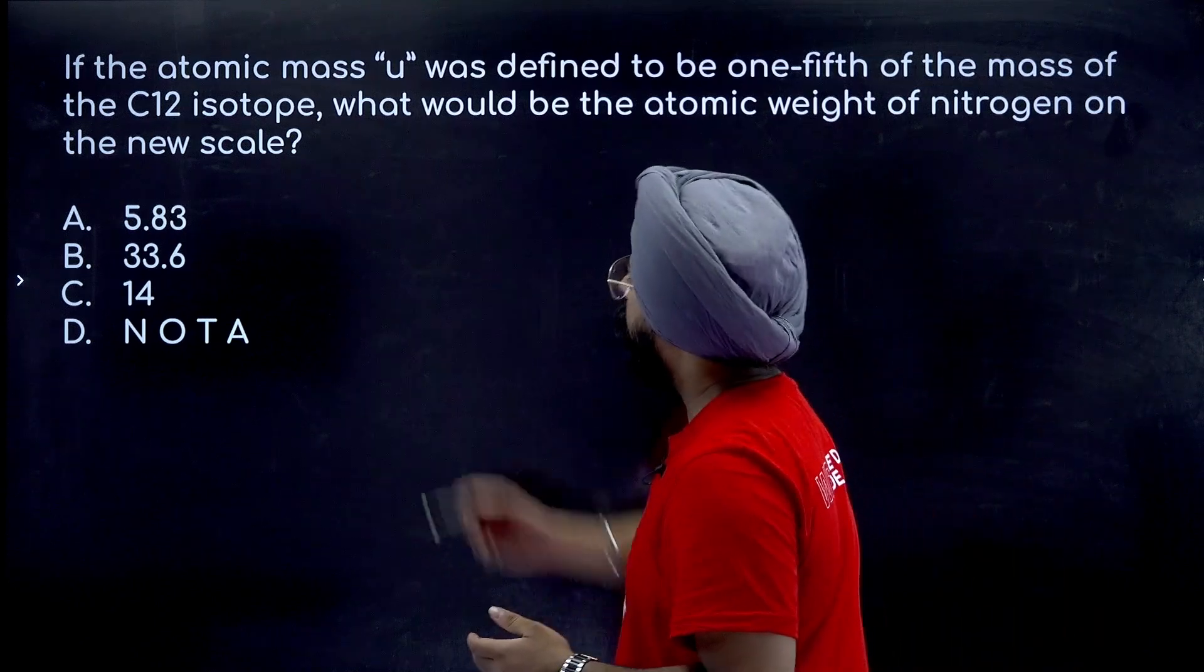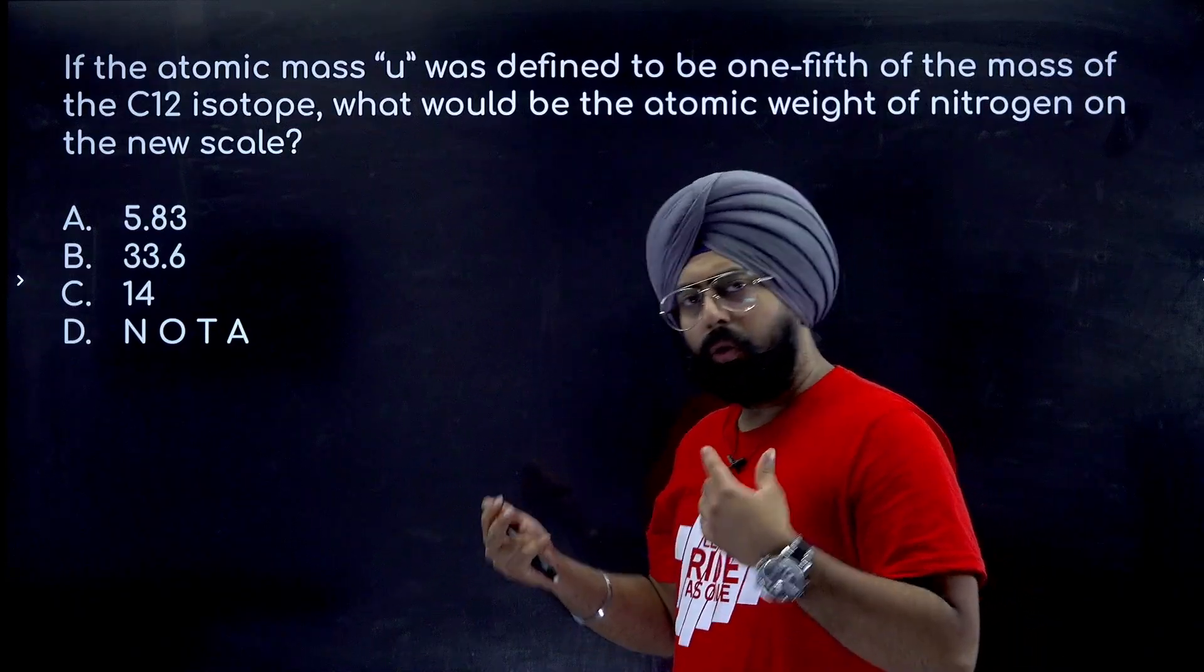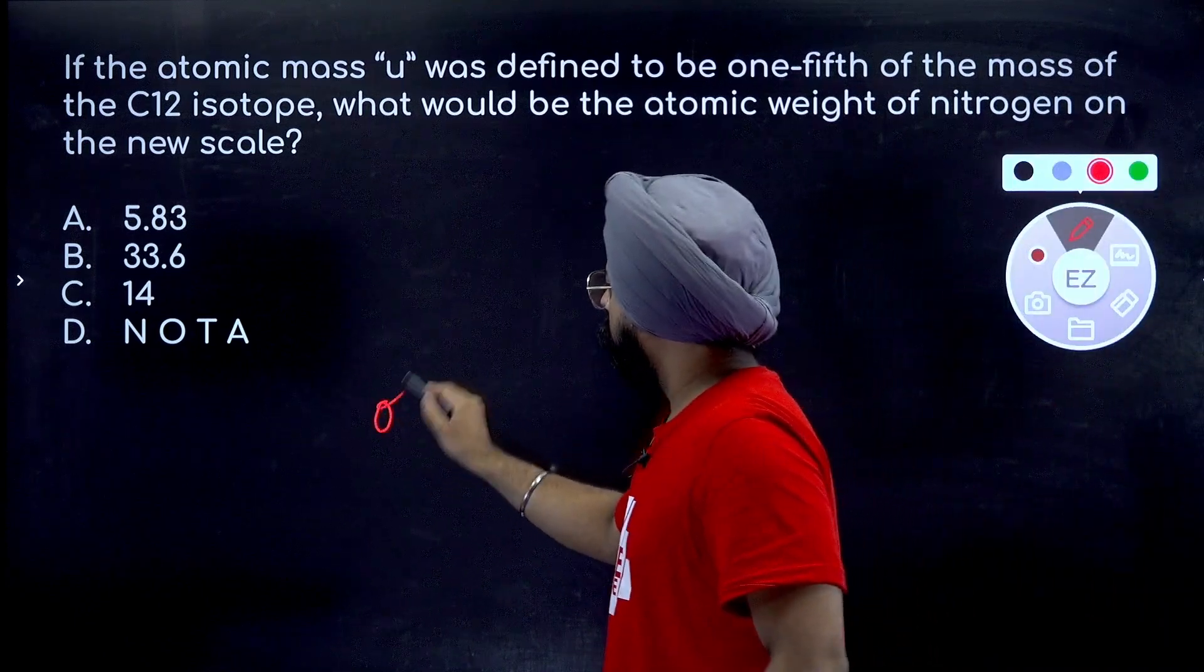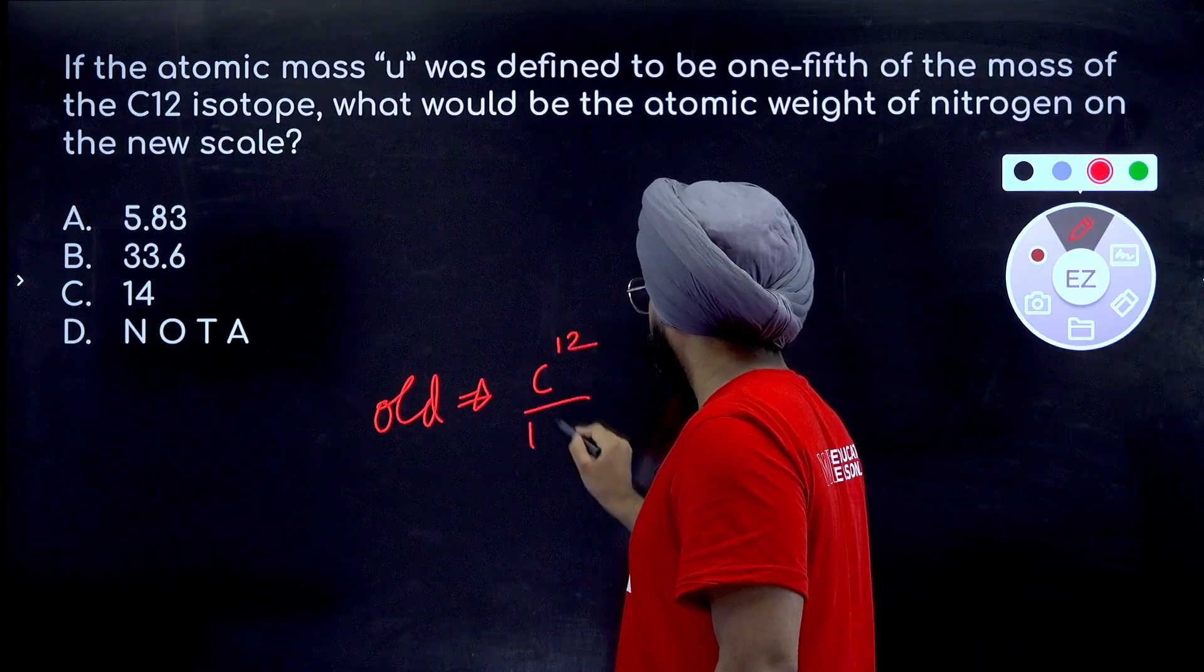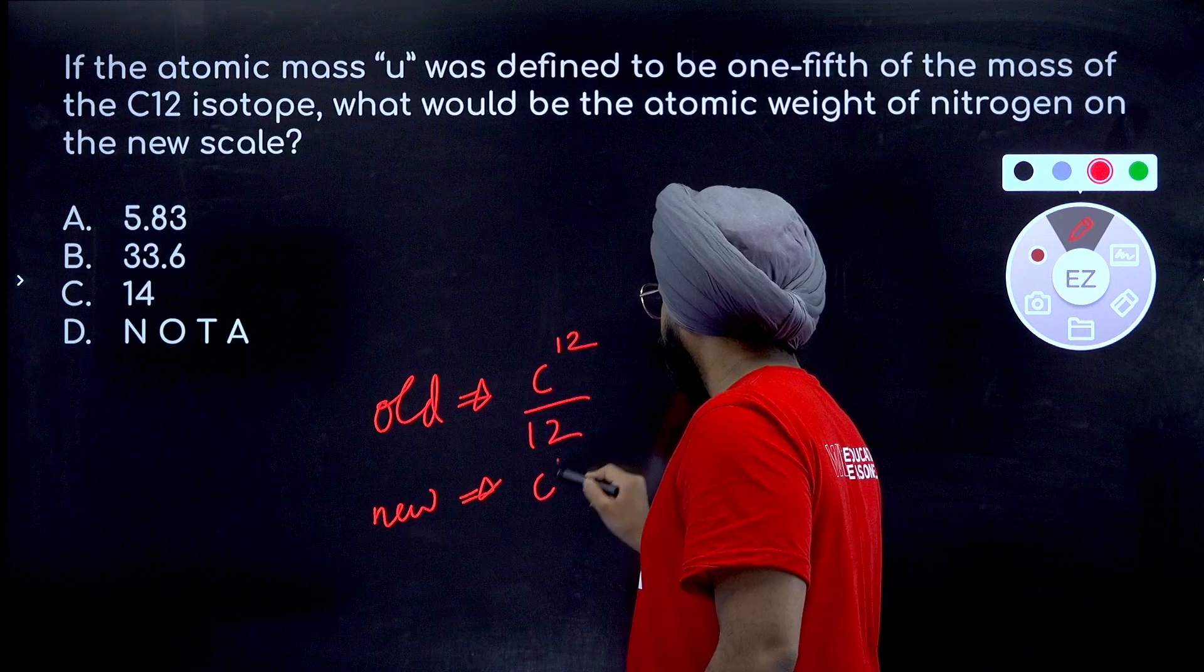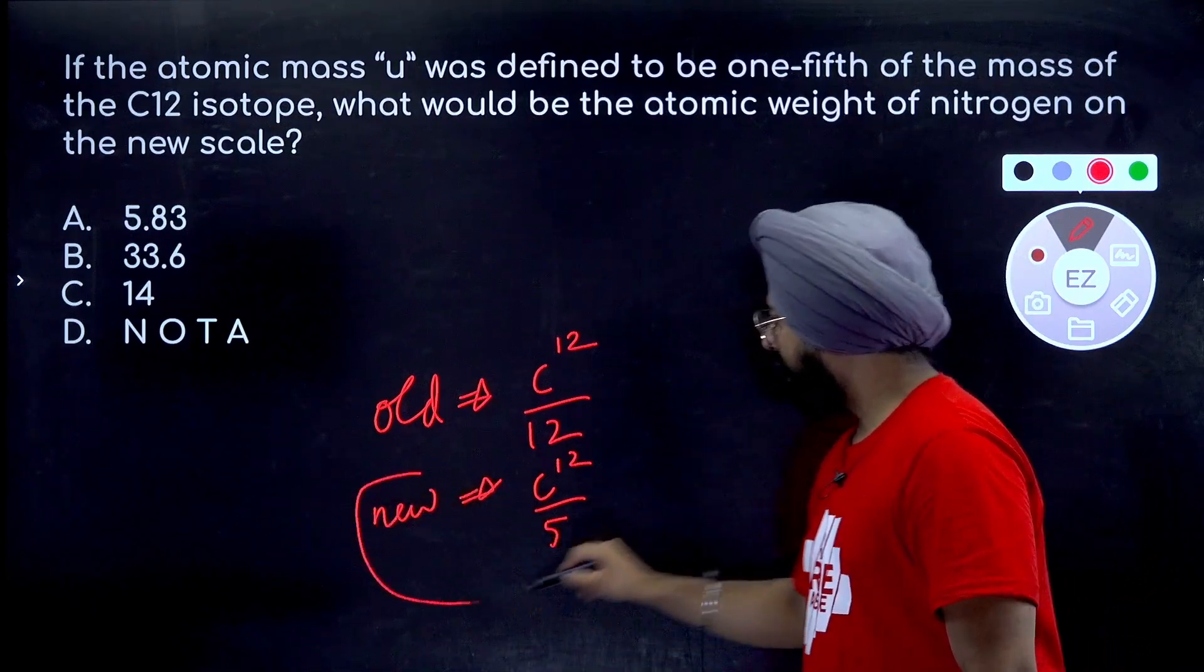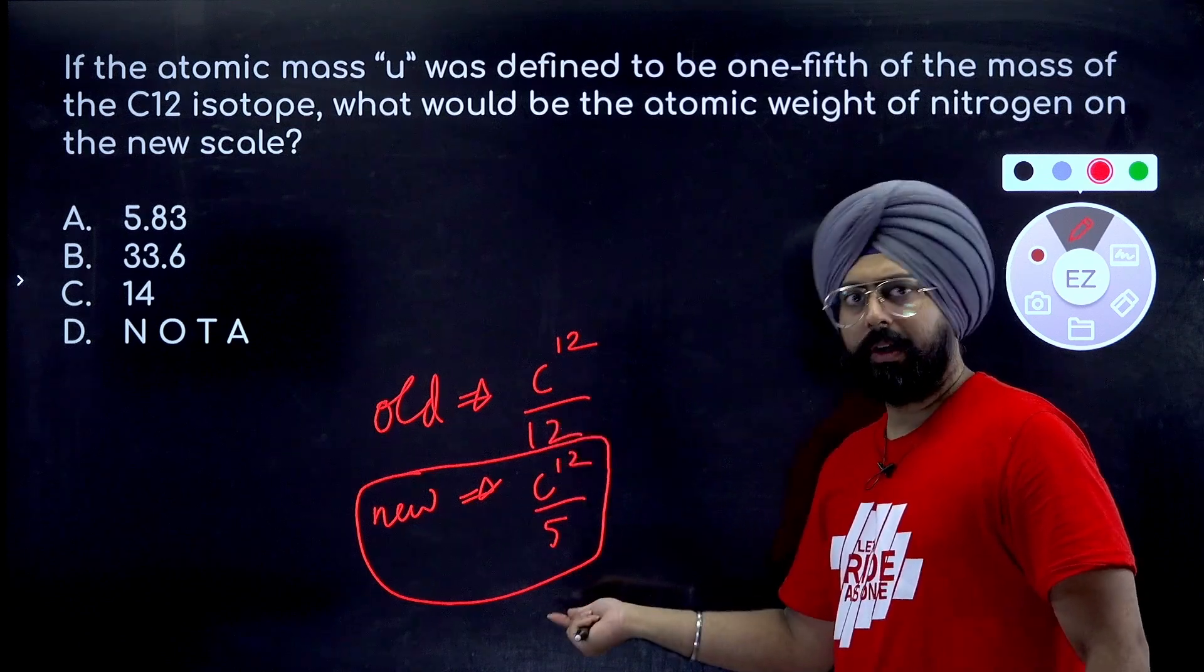So my dear friends, what's happening over here is that the new unit is bigger, right? The old unit was basically the mass of carbon 12 divided by 12. The new unit is basically mass of carbon 12 divided by 5, isn't it? This is the jazz that is happening. So can you see the new unit is bigger in size? Divided by 12 is smaller than divided by 5.